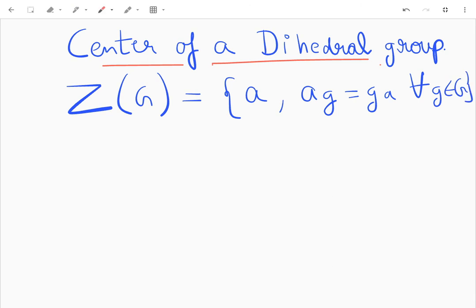Basically, what they are saying is that the center of a group will contain all those elements which themselves are from the group. So all those elements from the group that commute with every element of the group - that collection or set is called the center of a group.